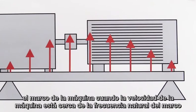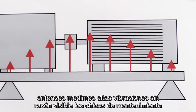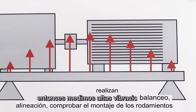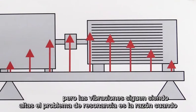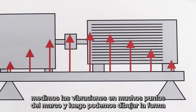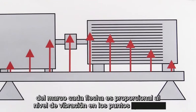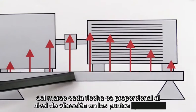We most commonly encounter resonance problems on a machine frame. When the machine speed is near the frame's natural frequency, we measure high vibrations without a visible reason. Maintenance technicians usually perform all standard procedures like balancing, alignment, and bearing mounting checks, but vibrations still remain high — the resonance problem is the reason. When we measure vibrations at many points on the frame, we can draw the shape of the frame, where each arrow is proportional to the vibration level at each point.